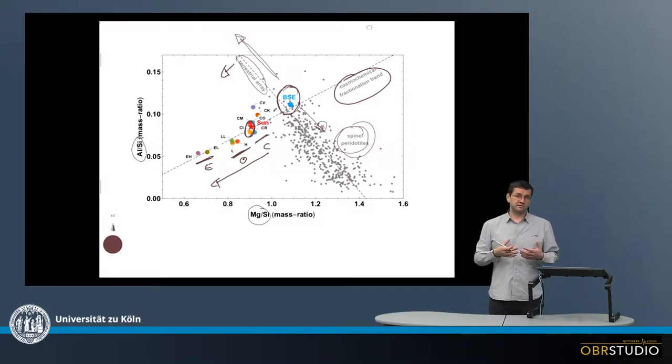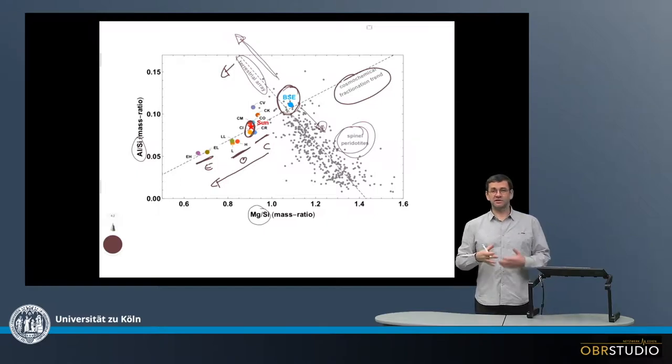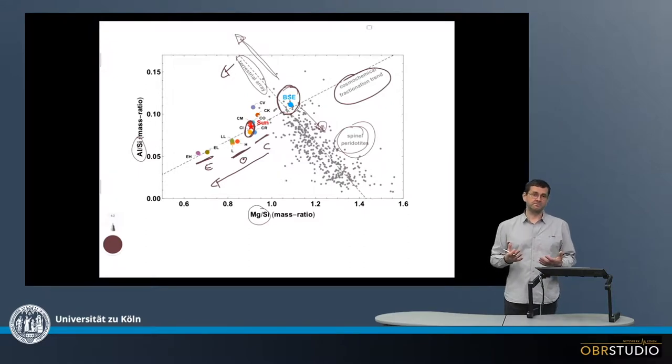And this is not simple to explain, because magnesium and silicon are main elements. So changing their concentrations is quite difficult, because it requires the addition or extraction of substantial amounts of material.